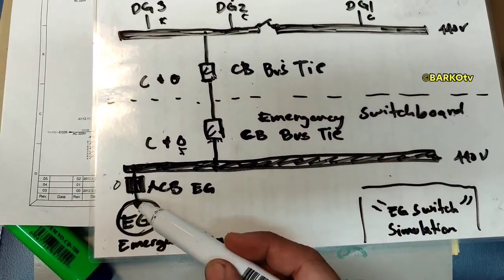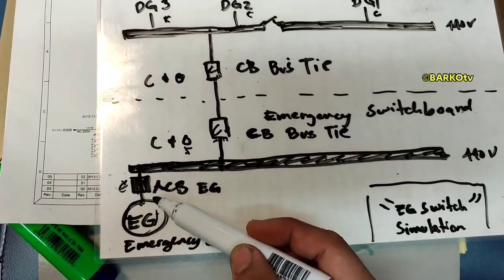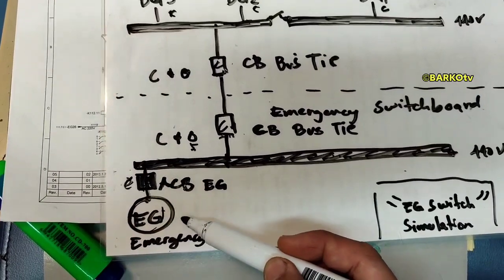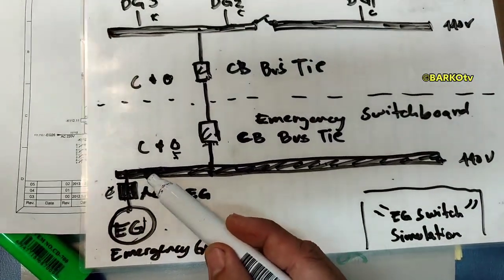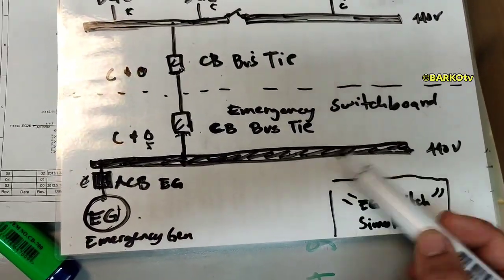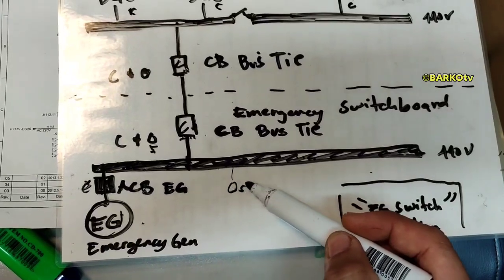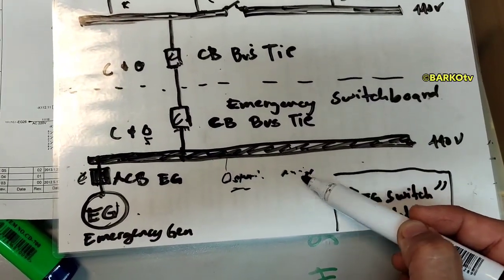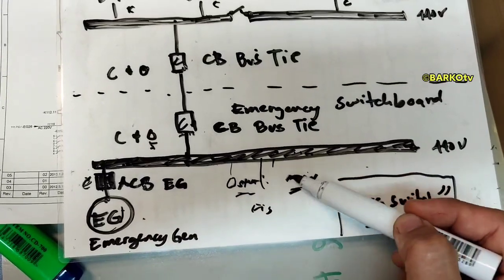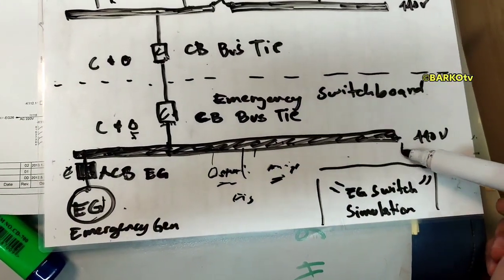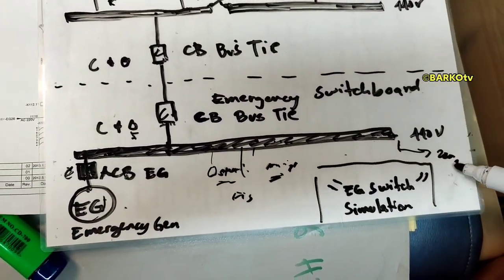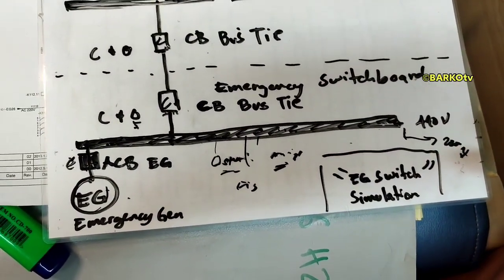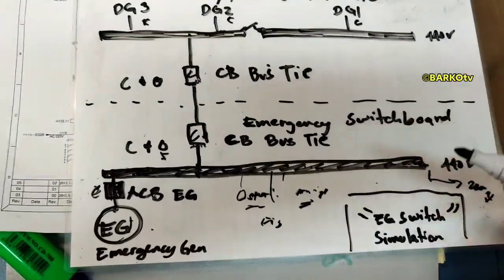After the isolation, the emergency generator will run, the ACB will close after the delay, and it will supply the emergency switchboard. The emergency switchboard powers important loads — for example, steering, main compressor number two, fire pumps, and also a transformer that converts voltage for emergency lighting and emergency power.